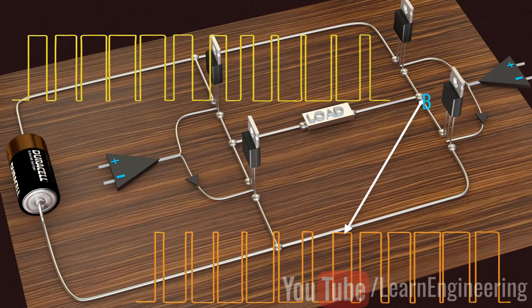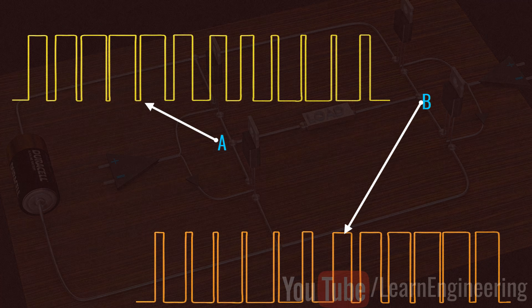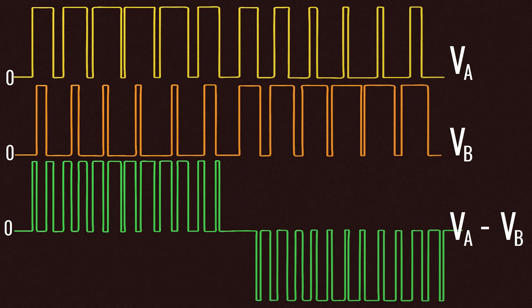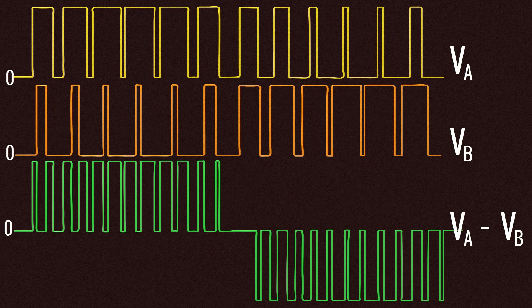Since we are drawing output voltage between point A and B, the net voltage will be the difference between A and B. This is the exact pulse train we need to create the sine wave.